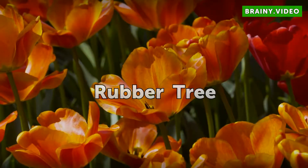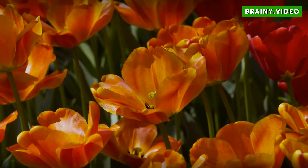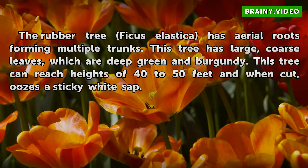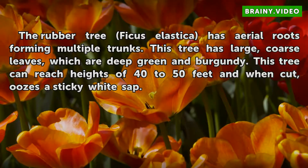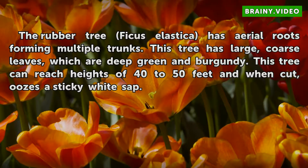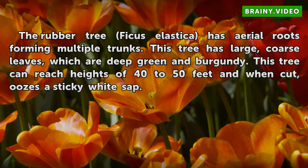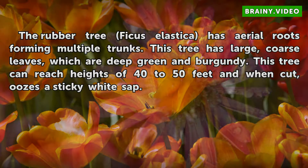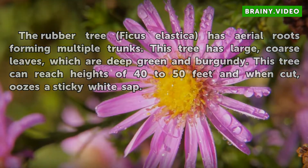Rubber Tree. The rubber tree, Ficus elastica, has aerial roots forming multiple trunks. This tree has large, coarse leaves which are deep green and burgundy. It can reach heights of 40 to 50 feet and, when cut, oozes a sticky white sap.